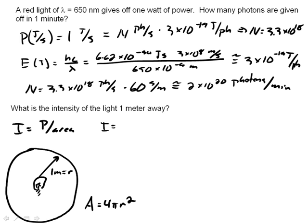And this gives me everything I need. The intensity is equal to 1 watt divided by 4 pi r squared meter squared. And r is 1, so that's easy.